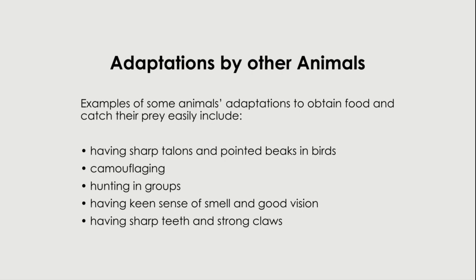What are some adaptations by other animals? Some have sharp talons and pointed beaks in birds, they camouflage, hunt in groups, have keen sense of smell and good vision, or have sharp teeth and strong claws. All of these different adaptations emphasize that they need these for survival — to obtain food and to protect themselves.